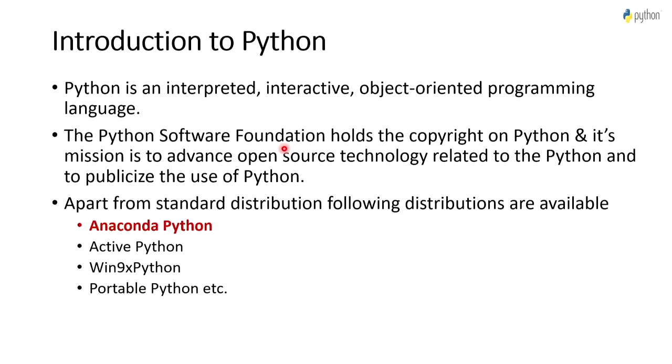Python is available in multiple distributions — similar to how C is available in Turbo C or GCC. There are multiple distributions of Python available, like the standard distribution called CPython. Apart from CPython, there is Anaconda Python, Active Python, and Portable Python. Today we will be using Anaconda Python. Anaconda is one of the most popular versions of Python for data science.